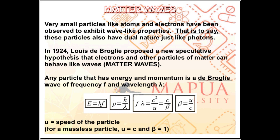In 1924, Louis de Broglie proposed a new speculative hypothesis that electrons and other particles of matter can behave like waves. So particles with wave-like properties. Basically, we have matter waves. Matter that is behaving like a wave.